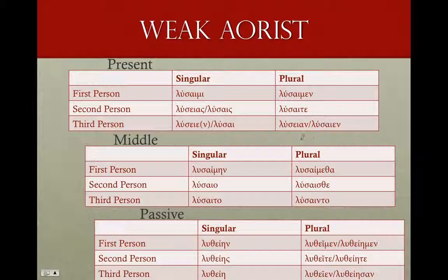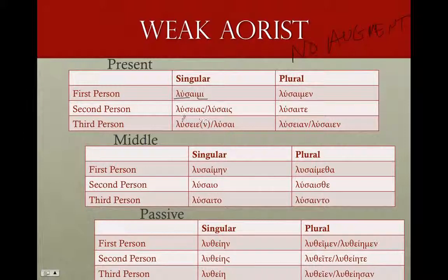The weak aorist — things get a little dodgy here. We get λύσαιμι, the aorist stem, and notice there is no augment. Can't emphasize that enough — the augment only shows up in the indicative. So λύσαιμι: we've got our stem, the alpha as the theme vowel, the iota, and the ending. And in these two singular forms there's an alternate long ending.